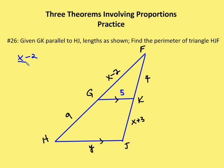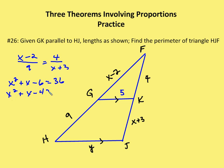We know that (x minus 2) over 9 is equal to 4 over (x plus 3). Using the means-extremes product theorem, we cross-multiply and get x squared plus x minus 6 equals 36. Subtracting 36 from both sides and applying the zero product property, we get x squared plus x minus 42 equals zero, which factors into (x plus 7)(x minus 6) equals zero, so x is either negative seven or six.